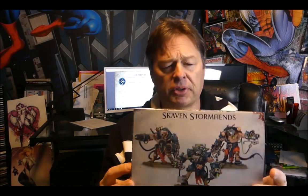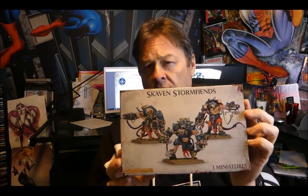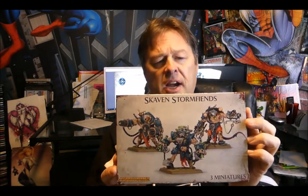This is a kit that comes from GW with Storm Fiends, a pretty powerful unit. The kit comes with essentially one of each weapon type: one guy with a warp fire projector, one with a rattling gun, and one with the poison globe wind launcher. If you're building the unit for tournament, like my son's doing for Adepticon, he wants a unit of three all with warp fire projectors.